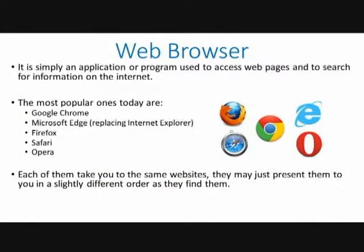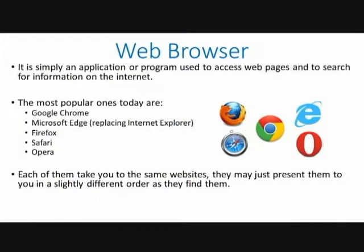Another thing to talk about is web browsers. A web browser is basically how you access the internet — it is the program you use to access the internet. There are about five that most people use. Most people use Google Chrome. Then you have Internet Explorer, which is being replaced by Microsoft Edge — both are the Microsoft Windows version of a web browser, with Internet Explorer being the older one and Edge the newer one. Then another popular one is called Firefox, which is very common. And one that more computer geeks know is one called Opera. They all take you to the same place — they just might display things in a slightly different order.